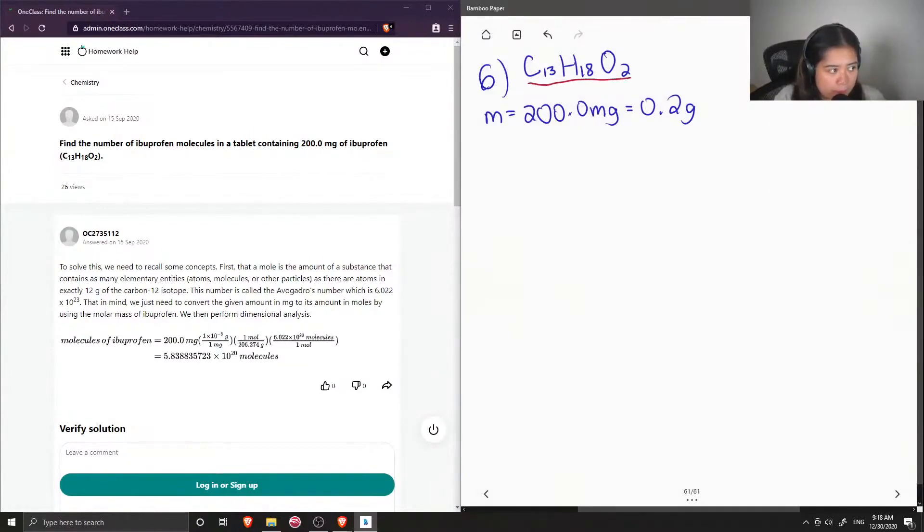And we want to find the number of ibuprofen molecules, but the first step is to just find the molar mass of ibuprofen. So molar mass can be denoted as a capital M of C13H18O2. So to find the molar mass of this overall compound, we need to first determine all of the atomic masses of the individual atoms. So these are just values you would find on your periodic table.